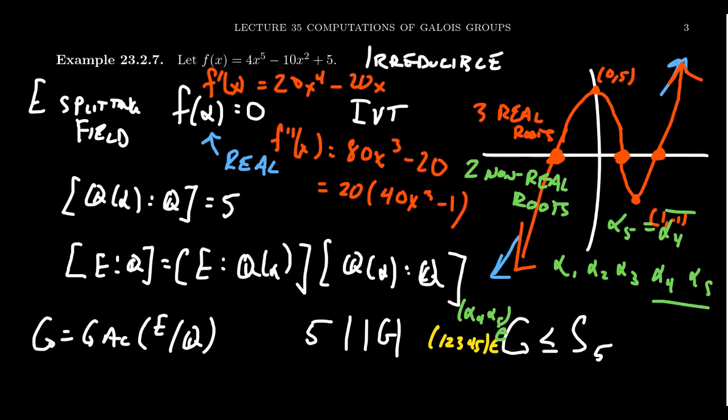Like I said, any subgroup of S5 that contains a five cycle and a two cycle produces all of S5. So this proves that the Galois group for this polynomial is in fact S5. This is one to remember because in the next lecture we're going to talk about the insolvability of the quintic polynomial, and this will be an example of a polynomial, a quintic polynomial, that cannot be solved using radicals whatsoever.